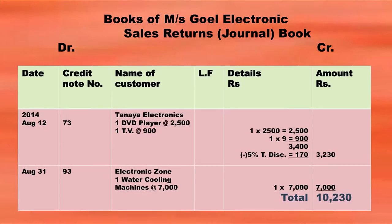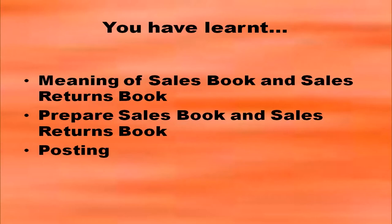The heading for the sales returns book should be 'Books of Messers Goel Electronics' followed by 'Sales Returns Book' or 'Sales Returns Journal', with columns for date, credit note number, name of customer, ledger folio, details, and amount. You have now understood how to deduct trade discount and prepare the sales returns journal or book. In this session, you have learnt the meaning of sales book and sales returns book, studied their preparation, and identified the posting procedures. Hope you understood this session very well. Thank you.